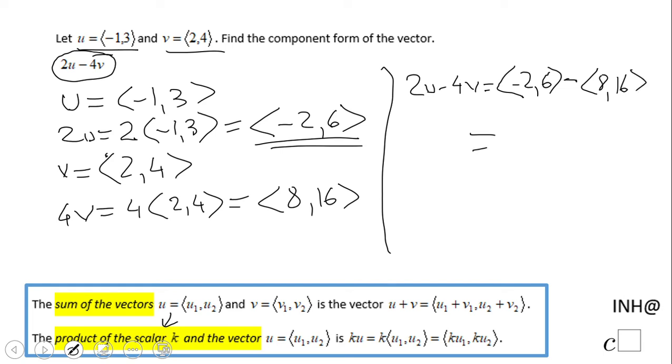Now we're going to use the component form. This will be -2 minus 8, and 6 minus 16. So -2 minus 8 equals -10, and 6 minus 16 equals -10.